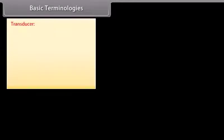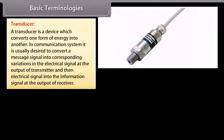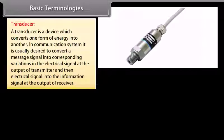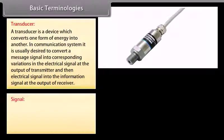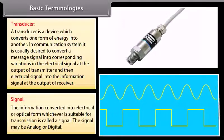Basic terminologies. Transducer: a transducer is a device which converts one form of energy into another. In a communication system, it is usually desired to convert a message signal into corresponding variations in the electrical signal at the output of the transmitter, and then the electrical signal into the information signal at the output of the receiver.